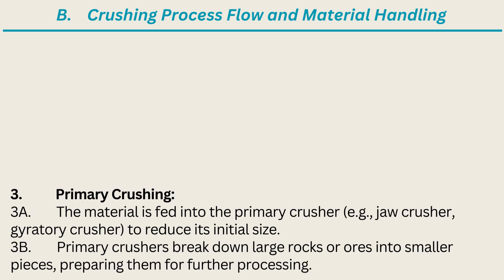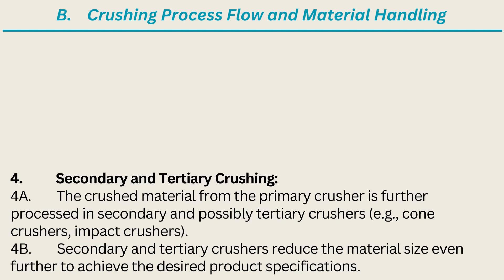3. Primary Crushing. The material is fed into the primary crusher, e.g. jaw crusher or gyratory crusher, to reduce its initial size. Primary crushers break down large rocks or ores into smaller pieces, preparing them for further processing. 4. Secondary and Tertiary Crushing. The crushed material from the primary crusher is further processed in secondary and possibly tertiary crushers, e.g. cone crushers, impact crushers. Secondary and tertiary crushers reduce the material size even further to achieve the desired product specifications.